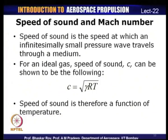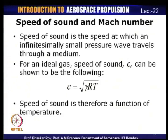Speed of sound is by definition the speed at which an infinitesimally small pressure wave travels through a medium — sound is essentially a small pressure wave. For an ideal gas, the speed of sound, usually denoted C, can be shown to equal C = √(γRT), where γ is the ratio of specific heats, R is the gas constant, and T is the static temperature.